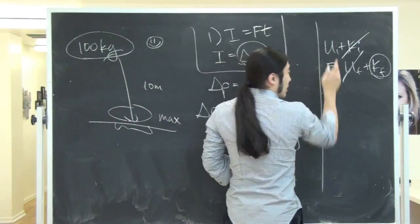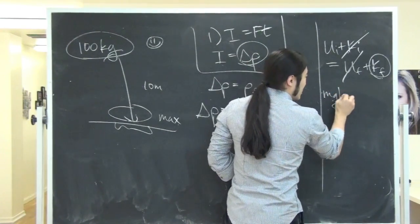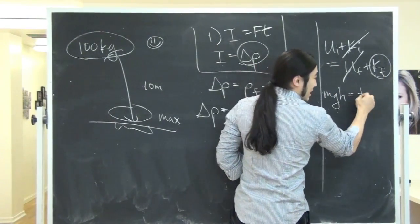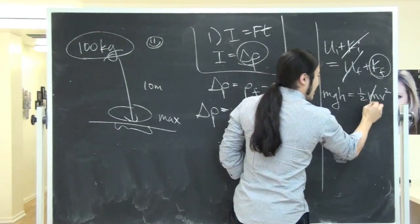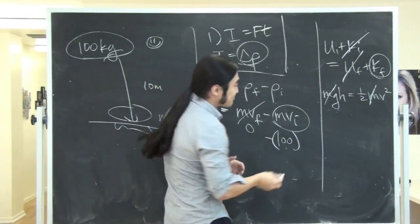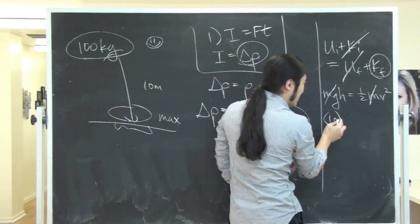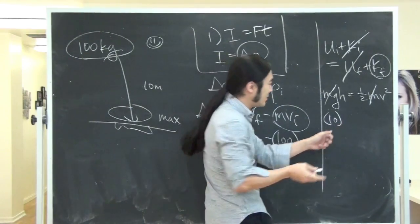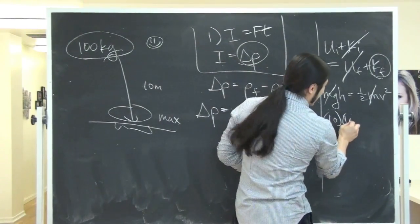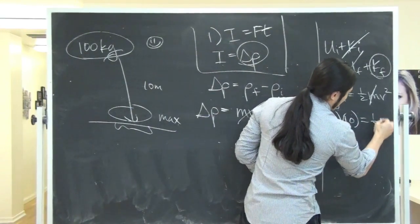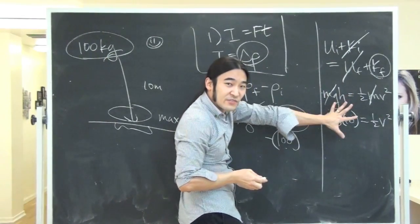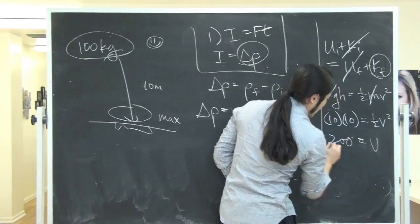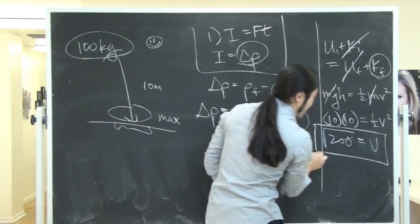So on the left, we'll have mgh. On the right, we're going to have 1/2 mv². Then you go ahead and kill the m's. For gravity, I'm going to be cheap and put 10, you should put 9.8 on the exam. So 10 and a height of 10, equals 1/2 v². Just brute force computation, so you get square root of 200.